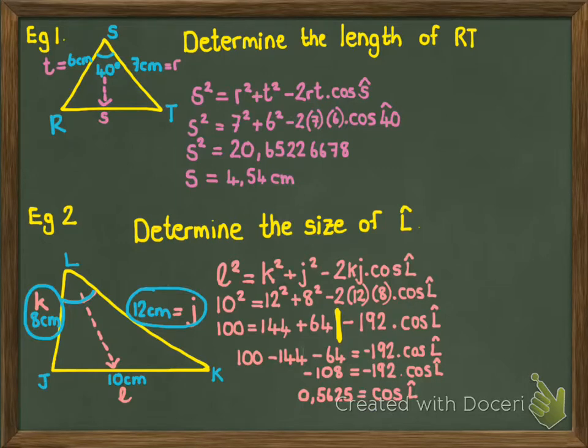So in correction, you can land up with a negative, and we'll have to do examples of that in class. In this case, it was positive 0.5625. So I use the inverse of cos, which is shift cos, and I've got angle L to be 55.77 degrees.